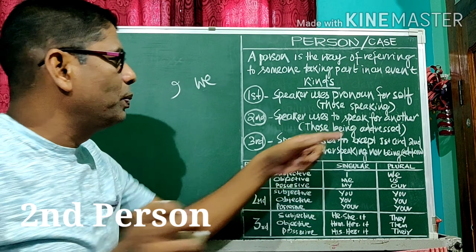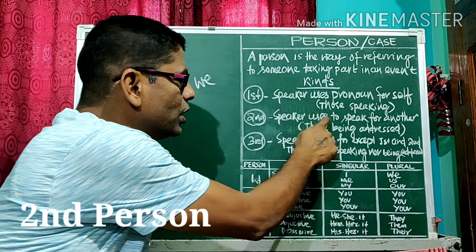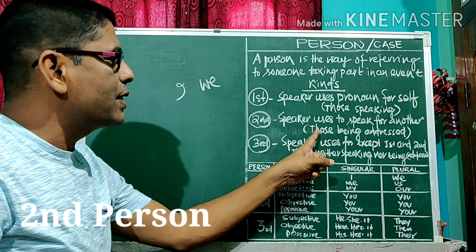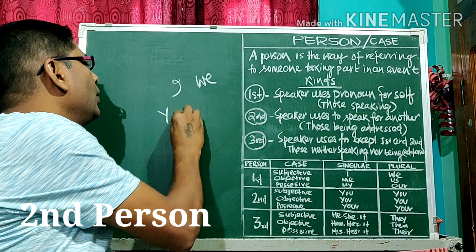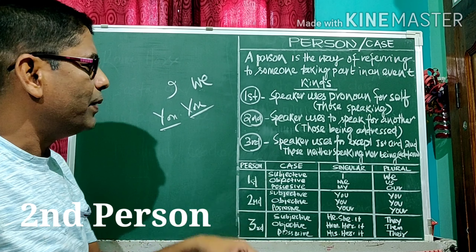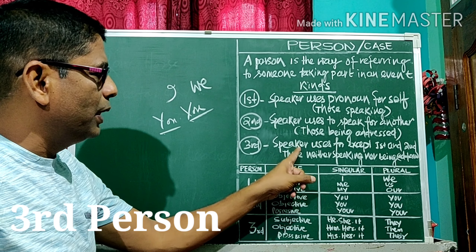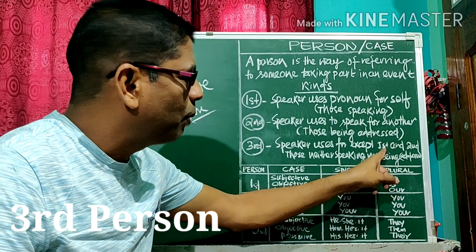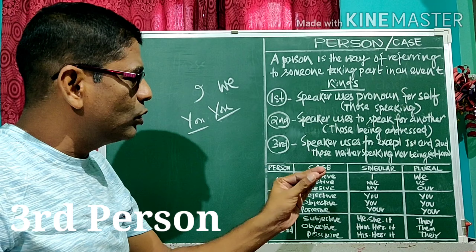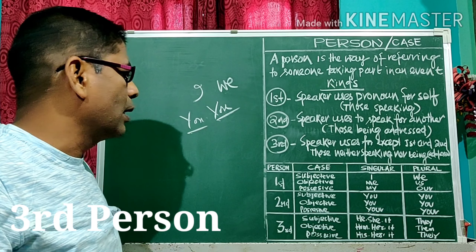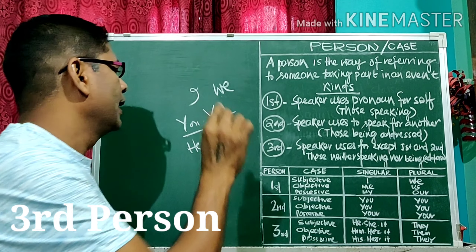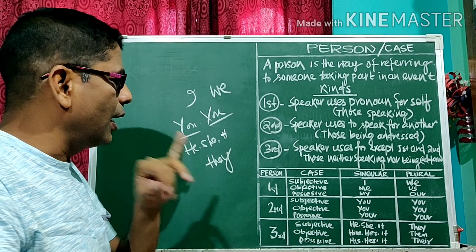Second person: the speaker uses a pronoun to speak to another, those being addressed. For example, you — singular and plural. Third person refers to whoever the speaker uses except the first and second person. For example, he, she, it, or in plural, they. These are the three persons: first, second, and third.